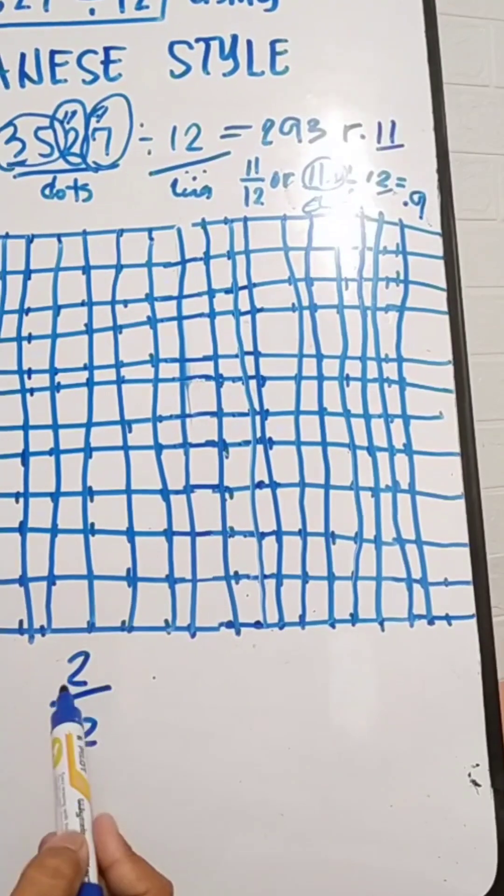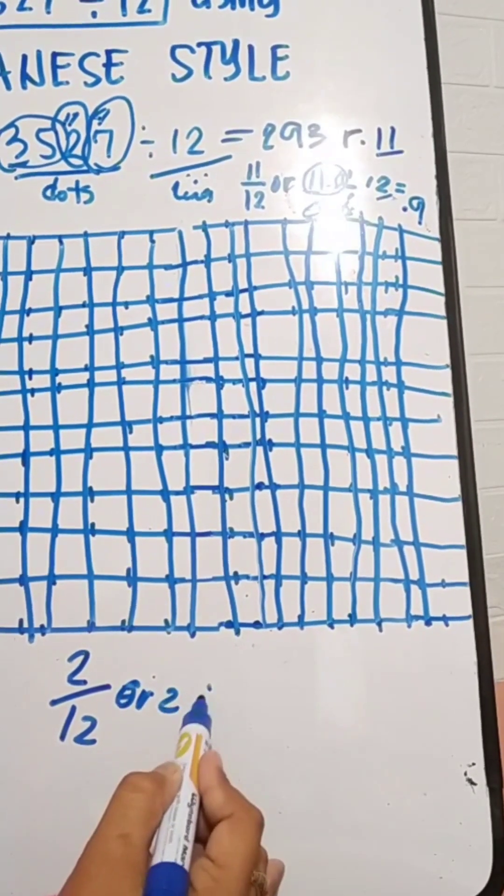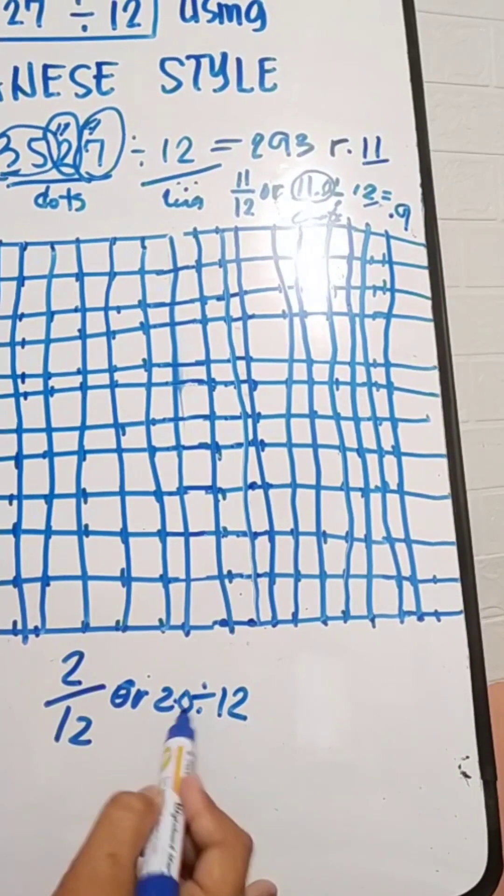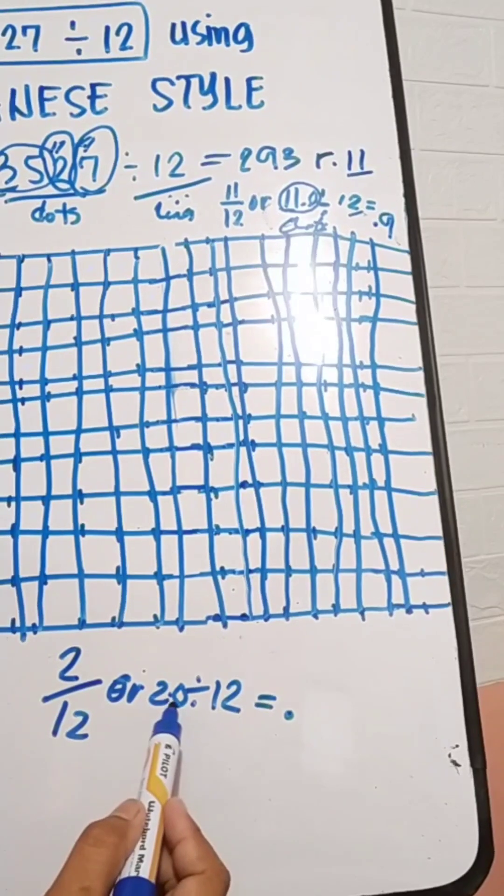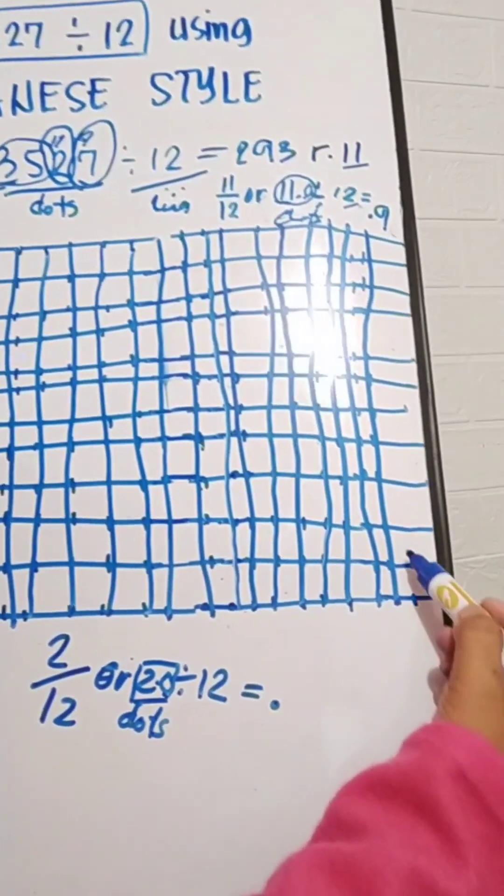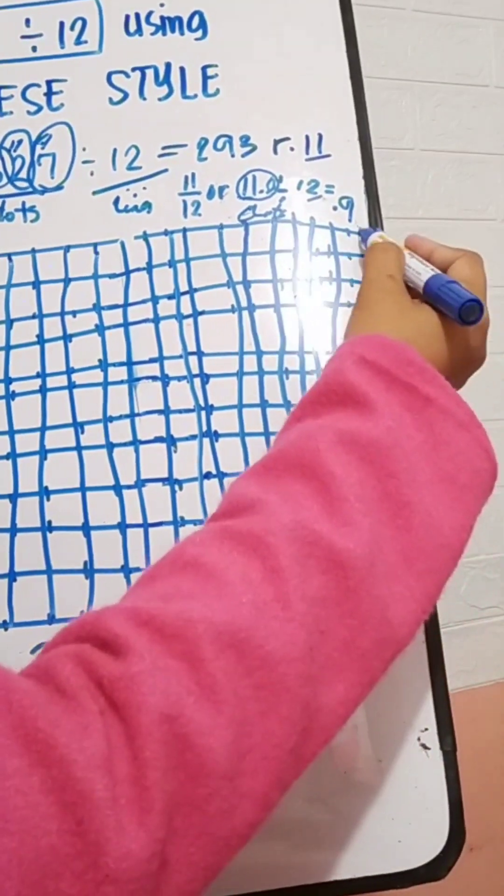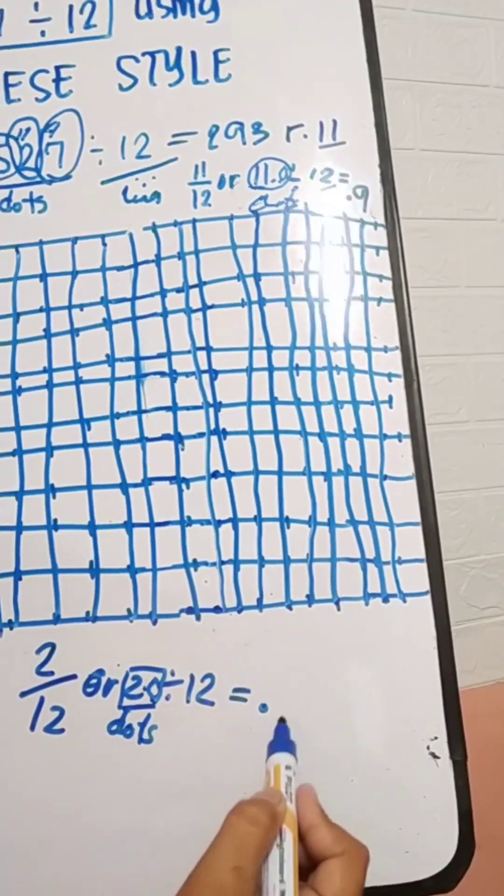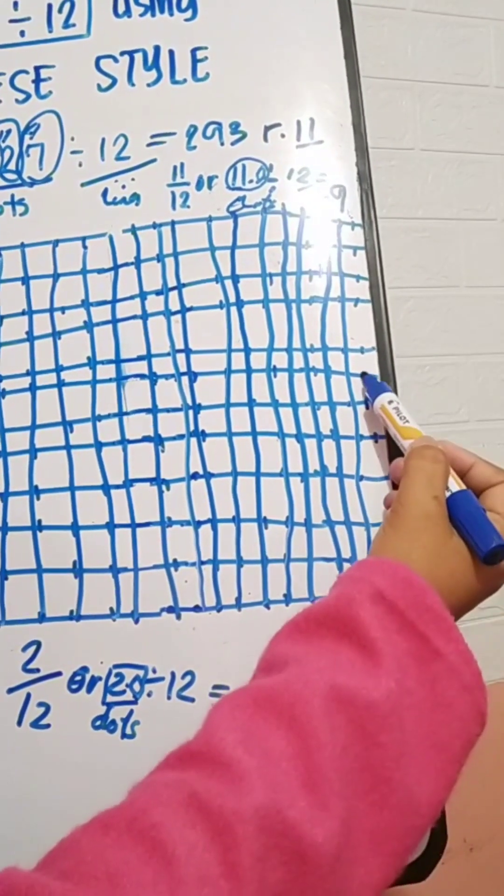Still we have a remainder 2 here, so let's continue this. Two divided by 12 couldn't be shared to 12 people, so you have to put another zero. So 20 dots shared to 12 people. 3, 4, 5... up to 20. So let's connect. So you have 1, so point 1.